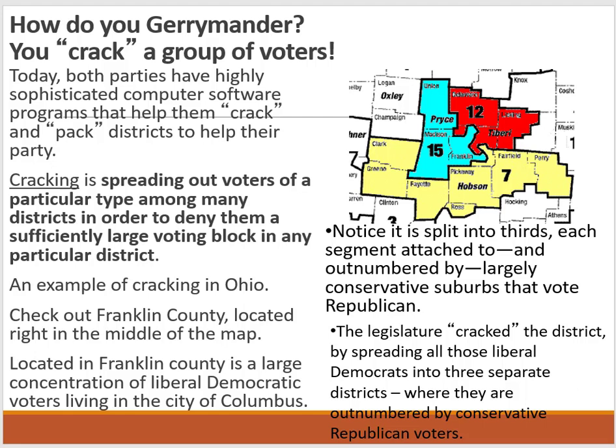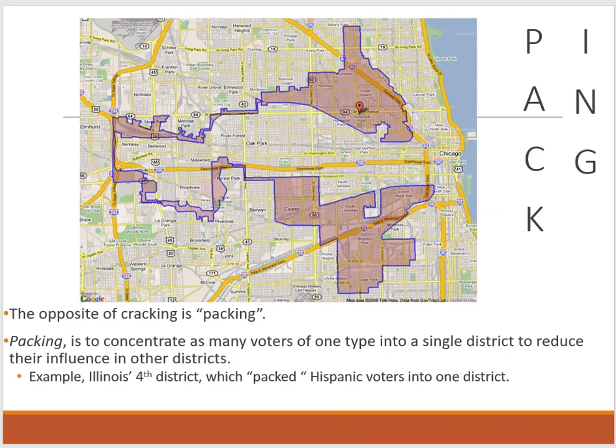The other gerrymandering strategy is called packing. With packing, you concentrate as many voters of one type into a single district to reduce their influence in other districts. Notice on the screen these very long, wonky shapes — there's no simple square or circle around a city. An example is Illinois's 4th district, where Hispanic voters were packed into one district hoping to give Hispanic voters more voice and more accurate representation.